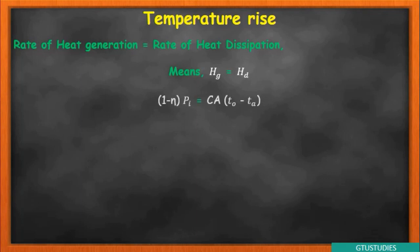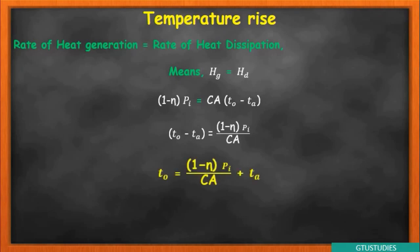Setting HG = HD, both equations are equated. The main target is to find TO (final oil temperature). Make (TO − TA) the subject by dividing both sides by C×A, then solve for TO by adding TA to the right side. This gives the final equation for temperature rise of the lubricating oil, which is the maximum allowable temperature we need to verify.